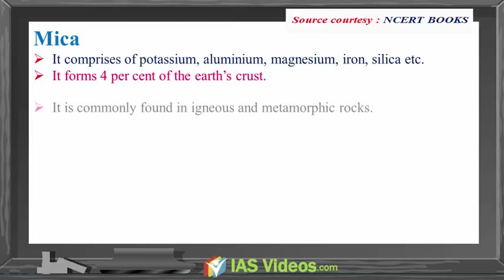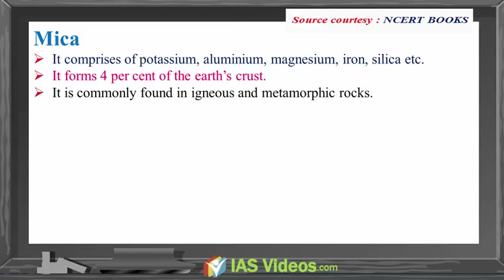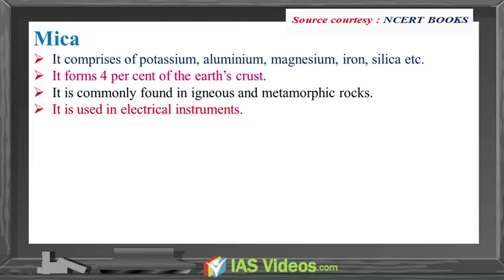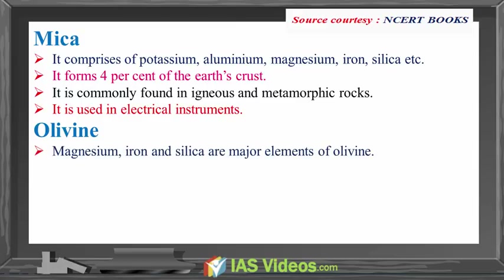Olivine: magnesium, iron and silica are major elements of olivine. It is used in jewelry. It is usually a greenish crystal often found in basaltic rocks. Besides these main minerals, other minerals like chloride, calcite, magnetite, hematite, bauxite and barite are also present in some quantities in the rocks.